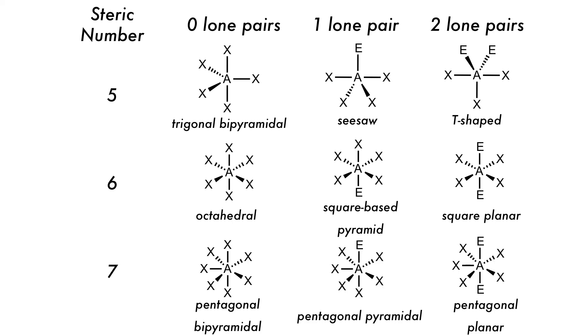And then for steric number 7, we have pentagonal bipyramid with zero lone pairs, pentagonal pyramid with one lone pair, and pentagonal planar with two lone pairs.